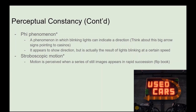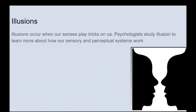Stroboscopic motion is the idea that motion is perceived when a series of still images appears in rapid succession — like a flip book where successive images of a bouncing ball are flipped through so fast they appear to move. Finally, illusions occur when our senses play tricks on us, and psychologists study illusions to learn more about how our sensory and perceptual systems work. That is the end of today's lesson — I hope you enjoyed it, and I will see you all in the next one.